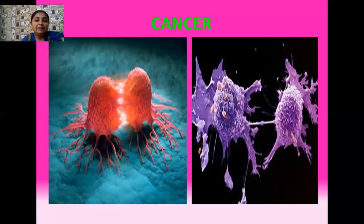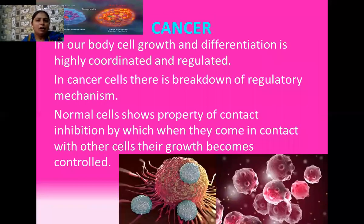Tumors means when so many clusters or masses of cells are present at one place. On the basis of whether these tumors locate themselves at a particular location or keep revolving in the body, we have divided them broadly into two types: benign tumors and malignant tumors. In normal cells, cell growth and differentiation is highly coordinated and controlled, whereas in cancer cells there is a breakdown of these regulatory mechanisms.